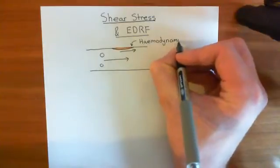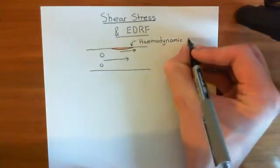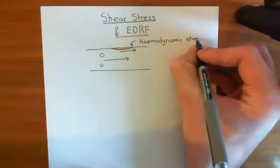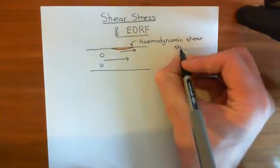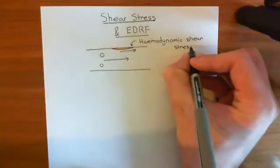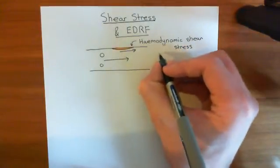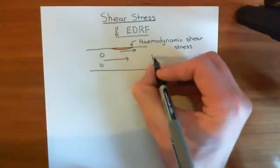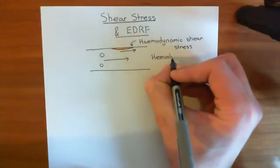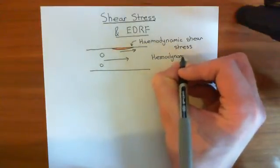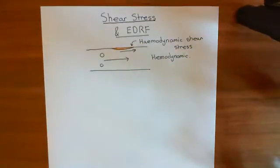This is the British English spelling of 'haeme.' The American English spelling would be just H-E-M-E, so alternatively, if you're using American English — which most viewers will be — it's 'hemodynamic' shear stress. Same thing. Get used to both spellings.